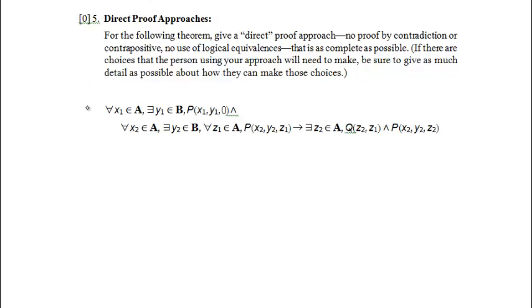For the following theorem, big theorem, give a direct proof approach, no proof by contradiction or contrapositive, no use of logical equivalences, that is as complete as possible. Can it be totally complete? Probably not. We don't know anything about P, we don't know anything about Q, so we're probably going to stop when we get to these predicates. If there are choices that the person using your approach will need to make, be sure to give as much detail as possible about how they can make those choices.